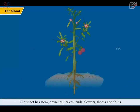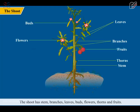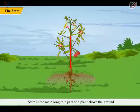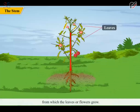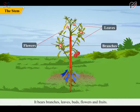The shoot has stem, branches, leaves, buds, flowers, thorns and fruits. Stem is the main long thin part of a plant above the ground from which the leaves or flowers grow. It holds the plant upright. It bears branches, leaves, buds, flowers and fruits.